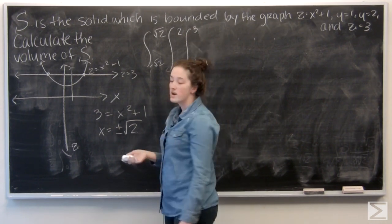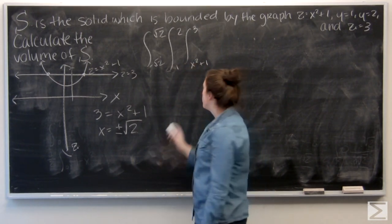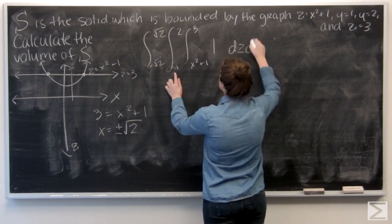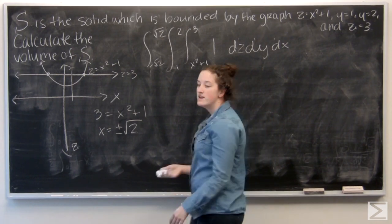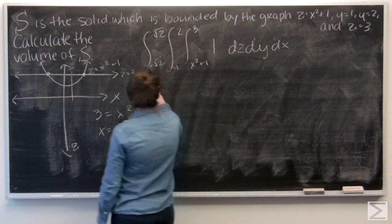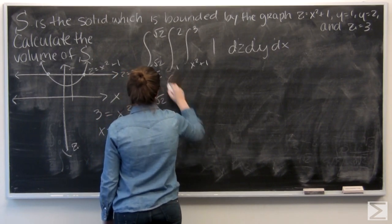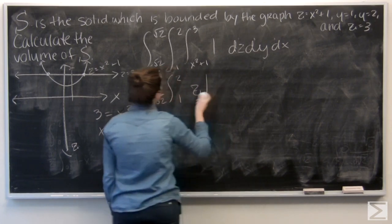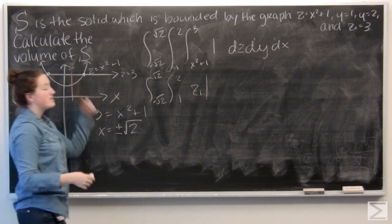And then I'm calculating volume, so I'm just integrating dv, so like 1. So integrating 1 with respect to z is just going to get me z. Let me go ahead and do that. And I want to evaluate z from x squared plus 1 to 3.